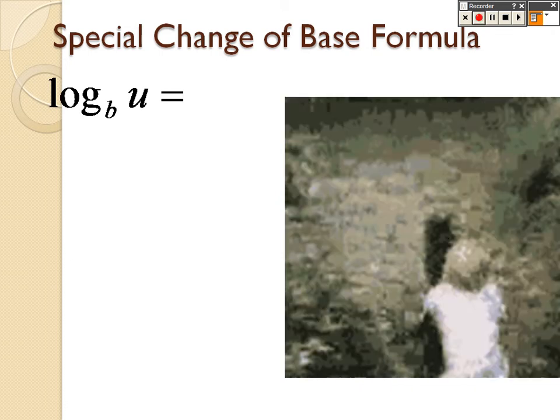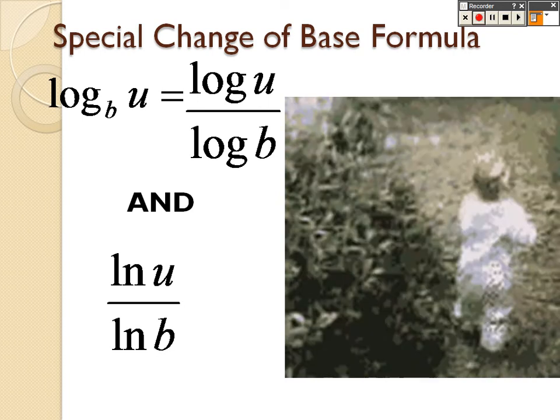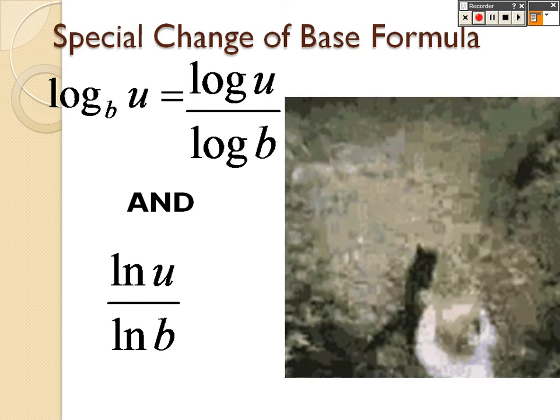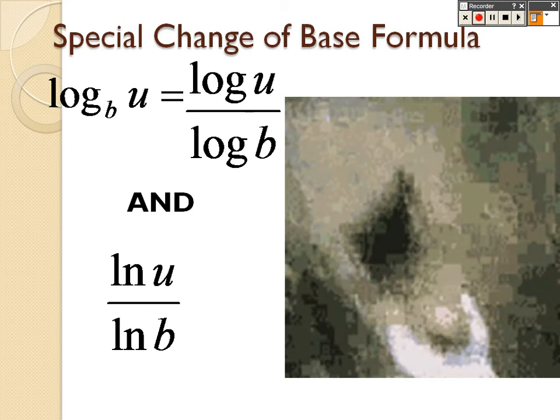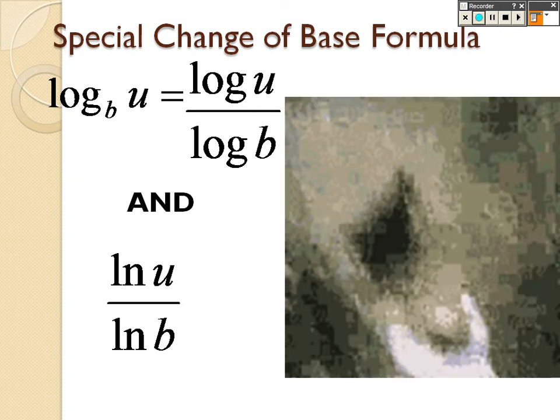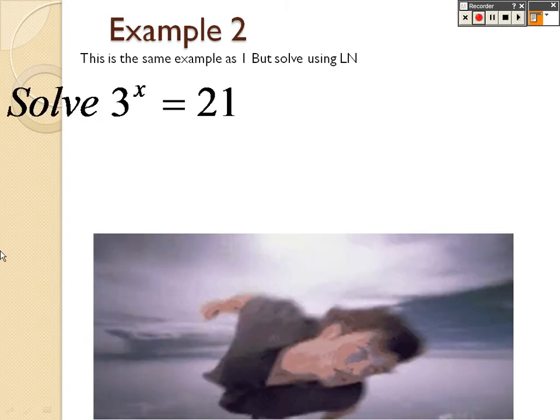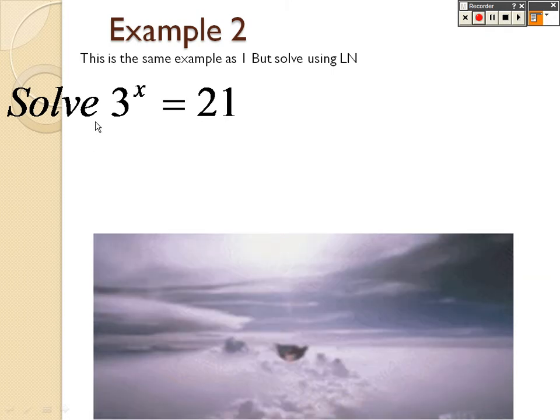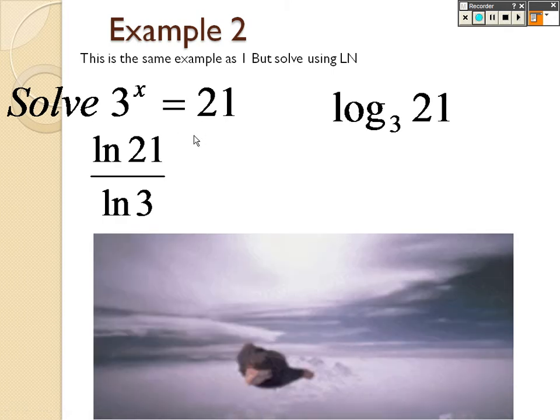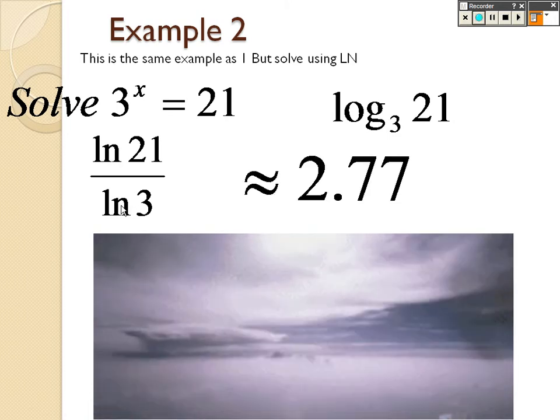A special change of base formula, we know that that's log u over log b, we went over that. But we also got to know that you could also do the natural log if you wanted to. The natural log of u over the natural log of b, it will give you the same answer. Okay, so just want you to know that as well. So example two is the same as one but I'm just going to use natural log to solve instead. This is to show you that you could do a log with a little 3 and a log with a little 3, and you could do natural log of 21 over natural log of 3 and still get 2.77 as your answer.